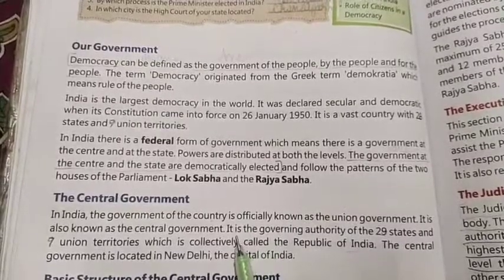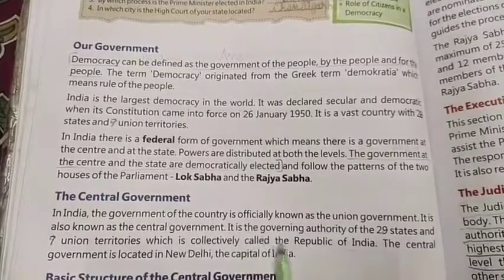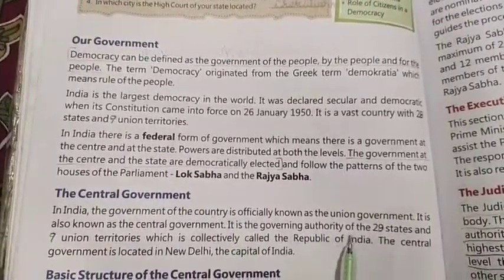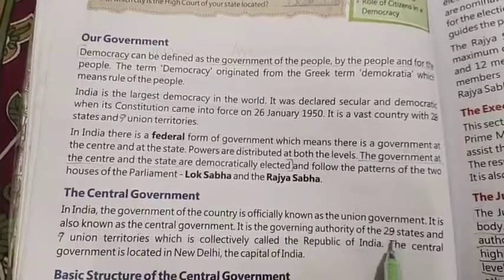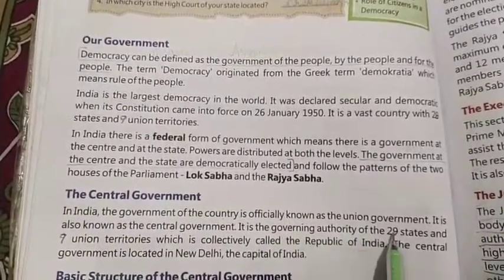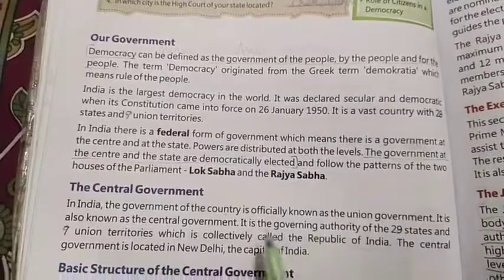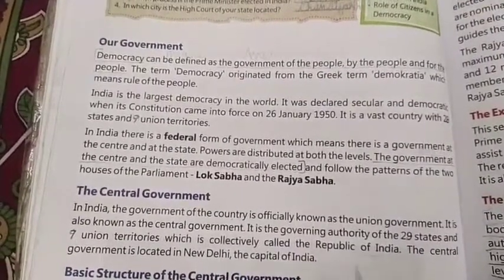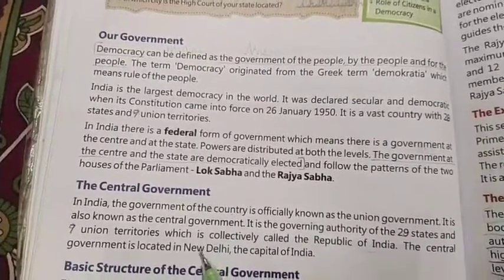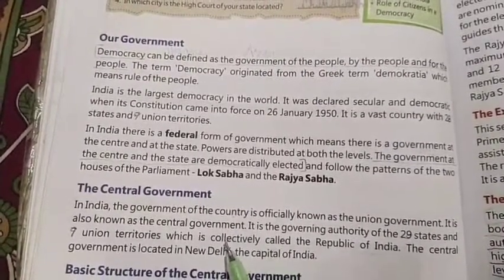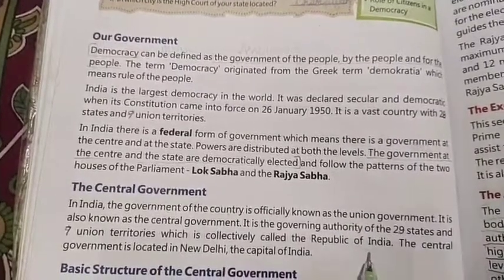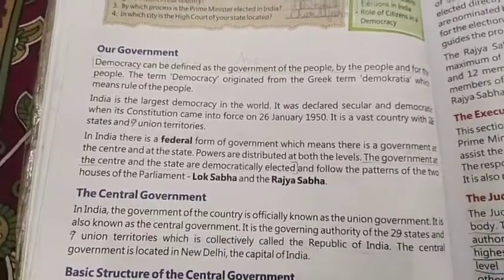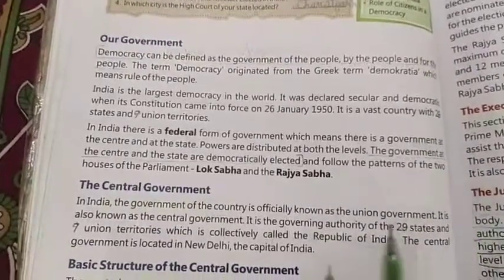The union government is the governing authority of 28 states and 9 union territories, which are collectively called the Republic of India. The central government is located in New Delhi, which is the capital of India.